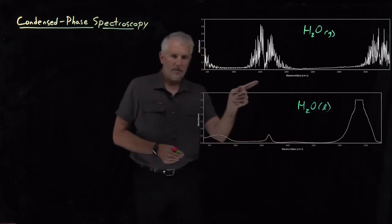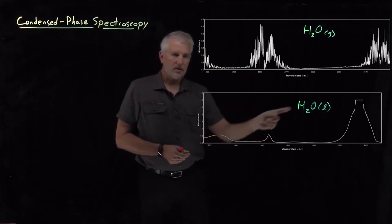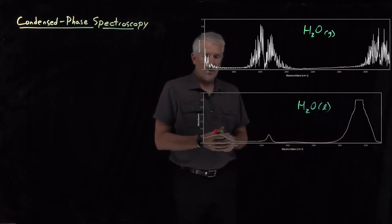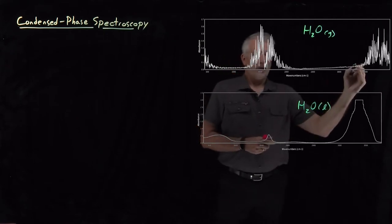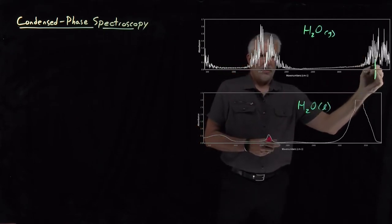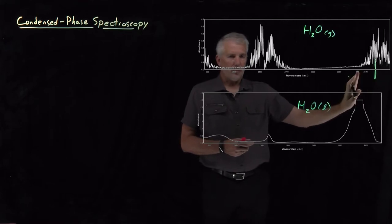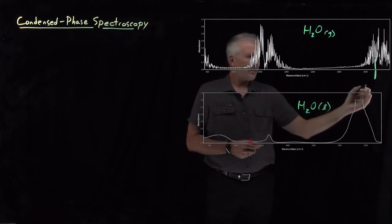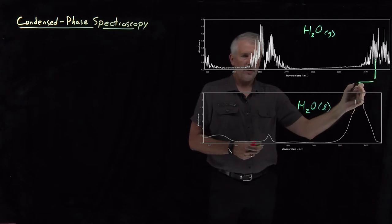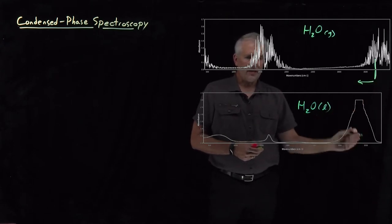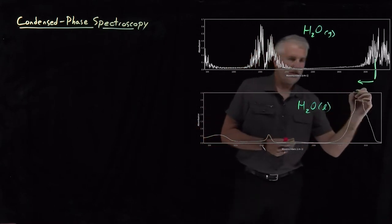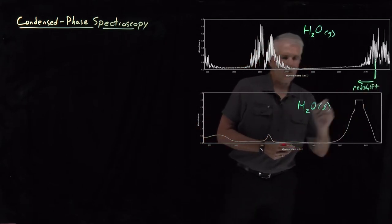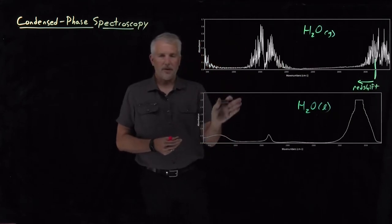I've lined up the frequencies here, so let's say this is 3,500 wave numbers on both of these spectra. You can see that the absorption for the OH stretches, which is a little above 3,500, 3,600, 3,700 in the gas phase, has been red shifted down to a value that's a little bit less than 3,500 in the liquid phase. This red shift is one of the important changes that happens in water as we move from the gas phase to the liquid phase.